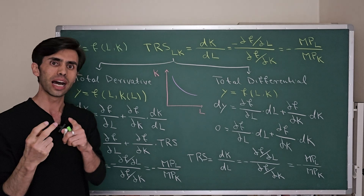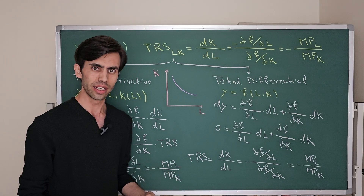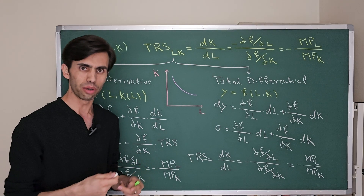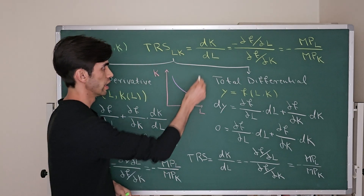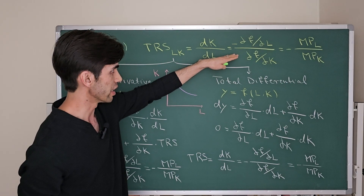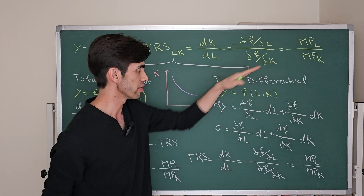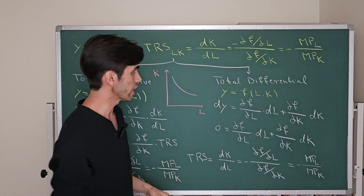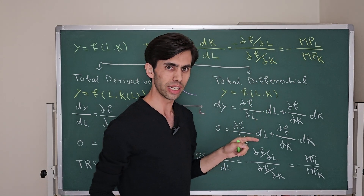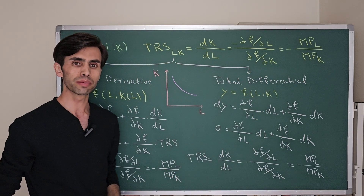We have two inputs: labor and capital. The Technical Rate of Substitution of L for K means we are using a little bit more labor and we are giving up a little bit of capital. TRS equals dK over dL, which equals negative partial derivative of f with respect to L over partial derivative of f with respect to K. The partial derivative of the production function with respect to L is the marginal product of labor, and with respect to K is the marginal productivity of capital.